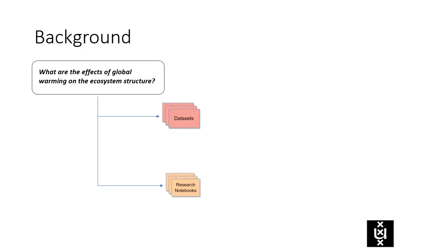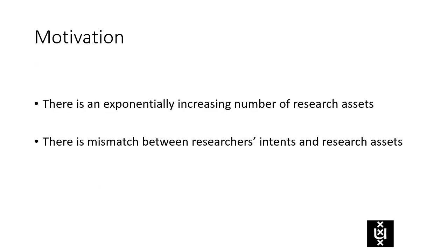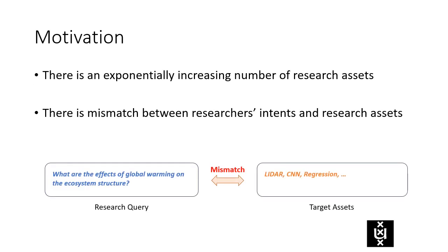Data-centric scientific research needs various research assets such as notebooks and datasets. Virtual research environments like Naviree provide researchers a collaborative cloud platform for research asset discovery and notebook development. However, on the one hand, there is an exceptionally increasing number of research assets. On the other hand, there is a mismatch between researchers' queries and research assets.